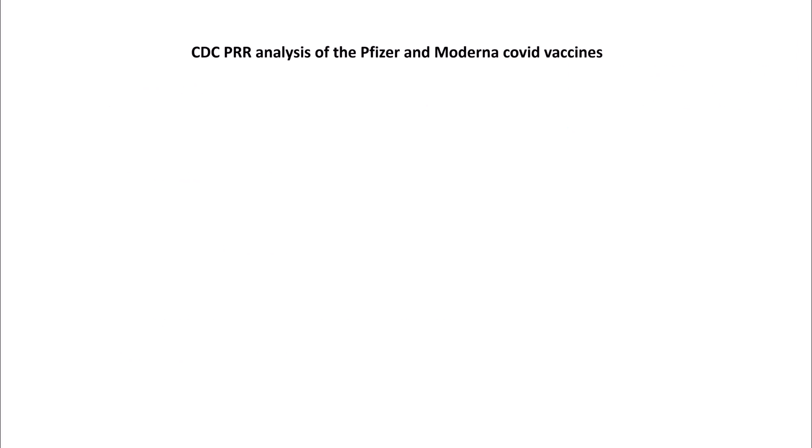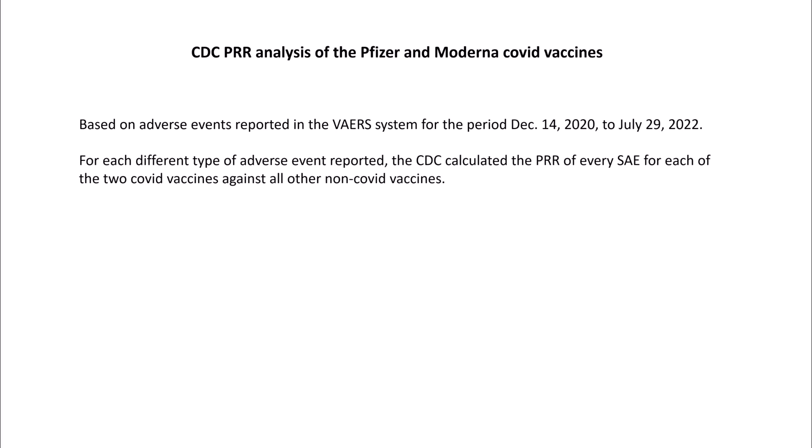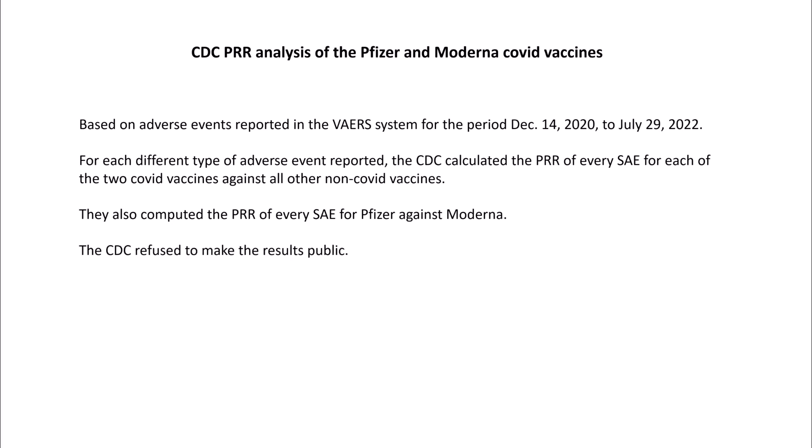The CDC conducted a PRR analysis of adverse events reported in VAERS for the Pfizer and Moderna vaccines for the period December 14th 2020 to July 29th 2022. For each different type of adverse event, the CDC calculated the PRR of every serious adverse event for each of the two COVID vaccines against all other non-COVID vaccines, and also computed the PRR of every serious adverse event for Pfizer against Moderna. The CDC refused to make the results public.